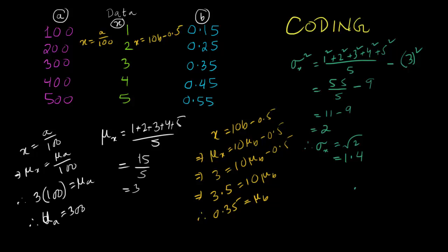In case of the standard deviation of data set A, it is going to be standard deviation of X equals to standard deviation of A divided by 100. That means 1.4 multiplied by 100 and that is going to be the standard deviation of A, which is 140. However, in case of B, the standard deviation of X equals to 10 into standard deviation of B, but there will be no minus 0.5 because standard deviation coding is not affected by addition or subtraction, only multiplication and division. That means it is going to be 1.4 divided by 10, that is the standard deviation of B and that is going to be 0.14.